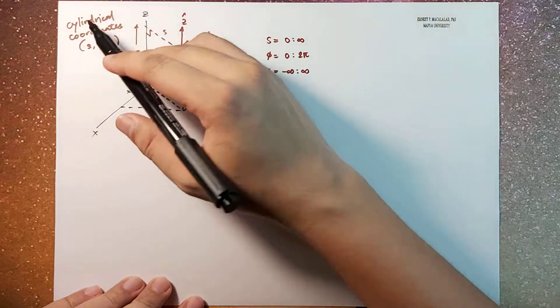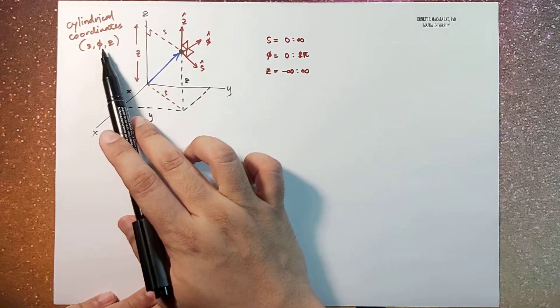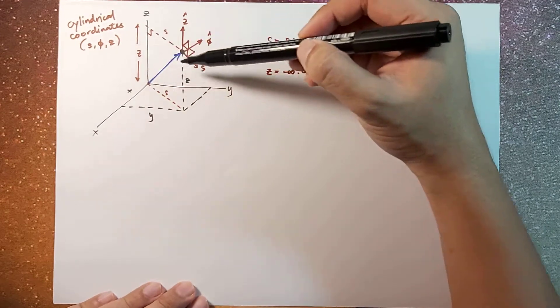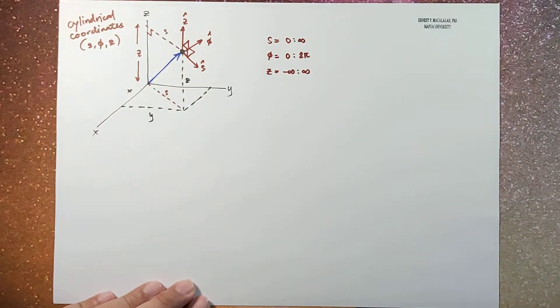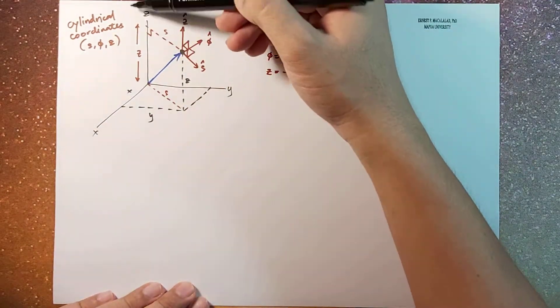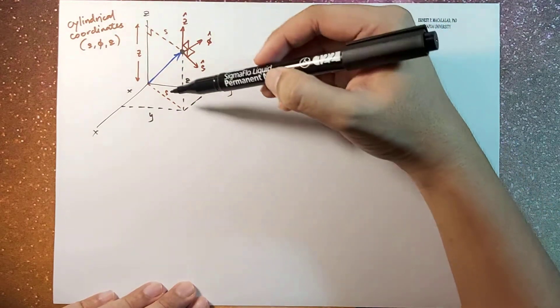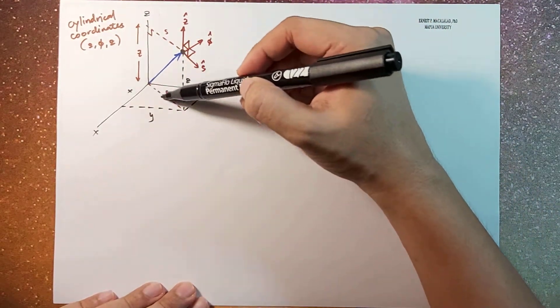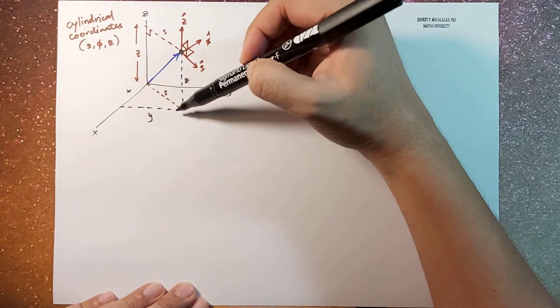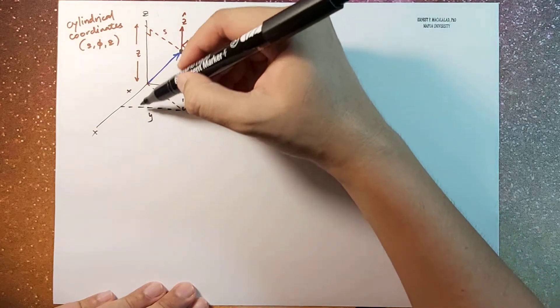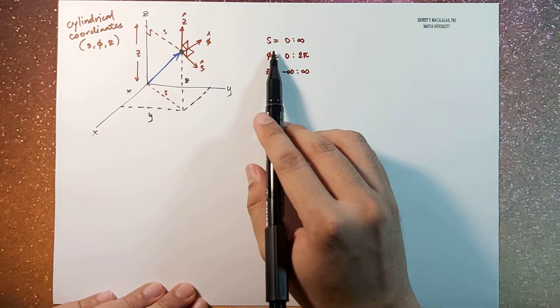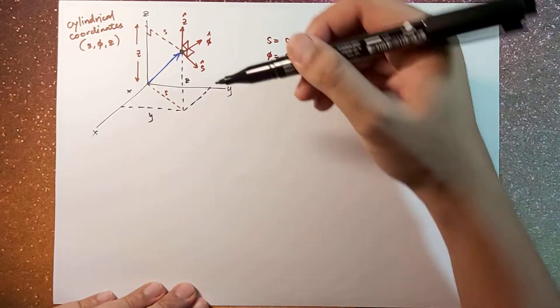Cylindrical coordinate system has coordinates s, phi, and z, and they are identified as follows: z is the same as your z component for your Cartesian coordinate system. It has a range from negative infinity to infinity along the z axis. s is the projection of this position vector on the xy plane, or in other words, that's the perpendicular distance from the z axis to your point, and the range would be from 0 to infinity.